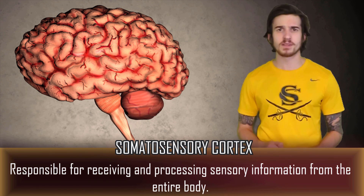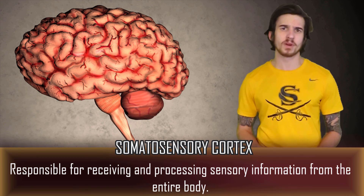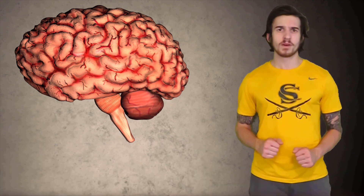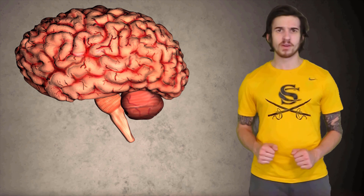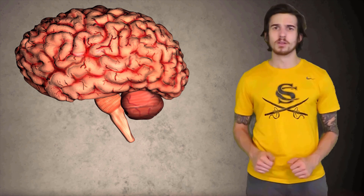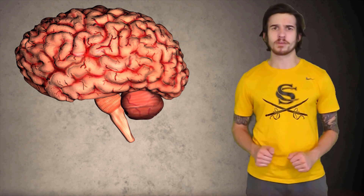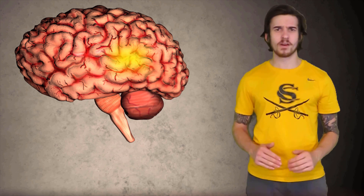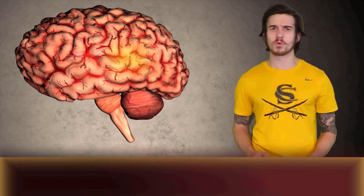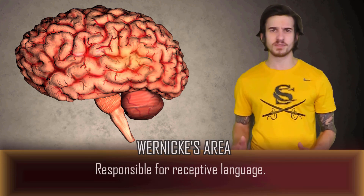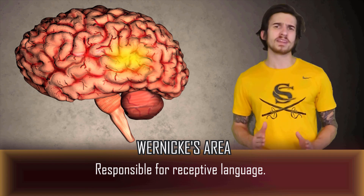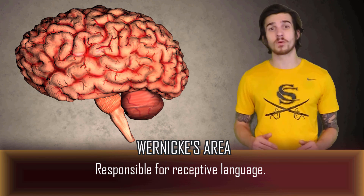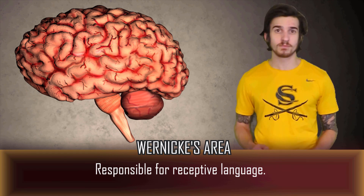Next we're going to talk about two specialized areas in our brain that are responsible for speech. For a majority of people, Wernicke's and Broca's area are located in the left hemisphere. Located in the superior temporal gyrus, we have Wernicke's area. Wernicke's area is responsible for receptive speech. Wernicke's aphasia occurs when damage to the area leads to difficulty in understanding others' speech.